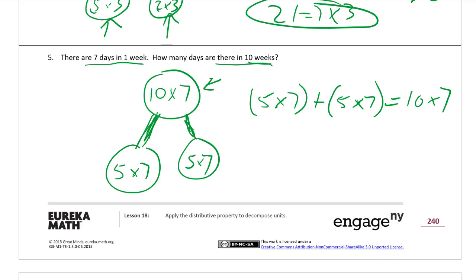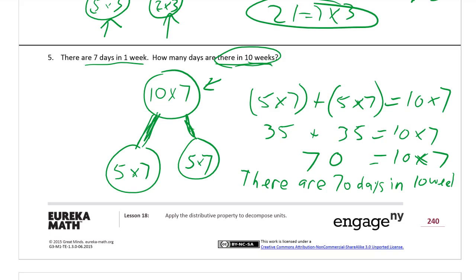We know that five times seven is, we can count by fives: five, ten, fifteen, twenty, twenty-five, thirty, thirty-five. So it's thirty-five plus thirty-five equals ten times seven. And thirty-five plus thirty-five, you might be able to add that in your head. Seventy. Ten times seven. You still need this because, remember, we're talking about days and weeks now, not just numbers. There are 70 days in ten weeks.